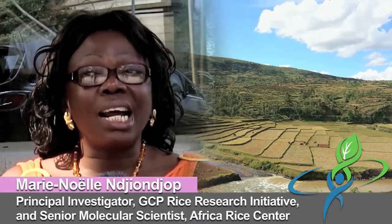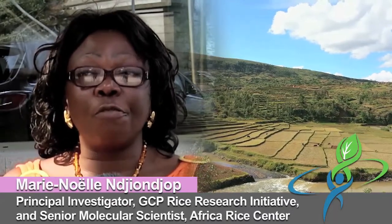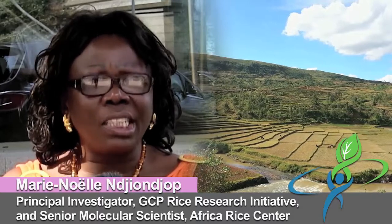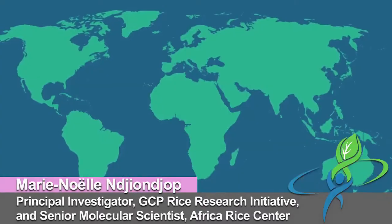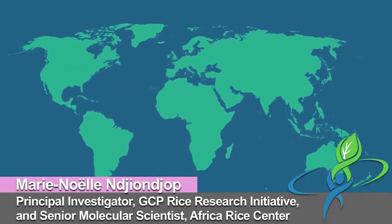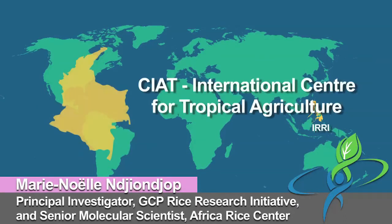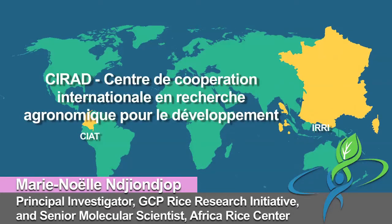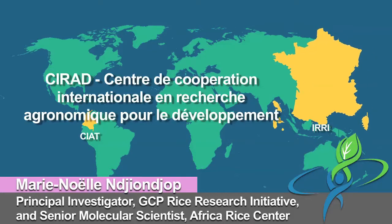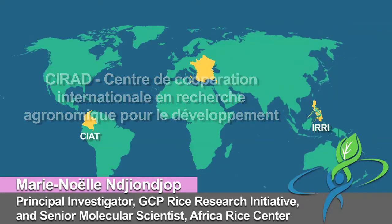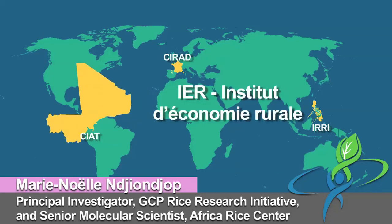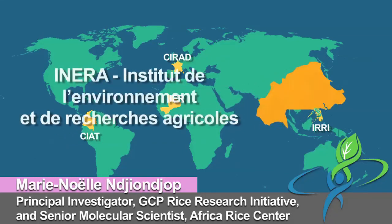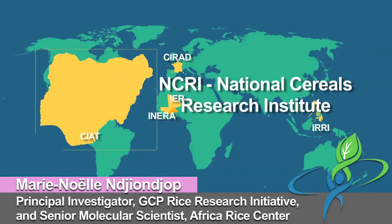The project is very challenging — dealing with drought and with a new mass approach. So we are working as a network. Several CGIAR centers are involved: IRI is our partner, CIRAD is also our partner, and an advanced institute in France is involved. In Africa, our national program partners include IER (Institut d'Economie Rurale) based in Mali, INERA from Burkina Faso, and NCRI in Nigeria.